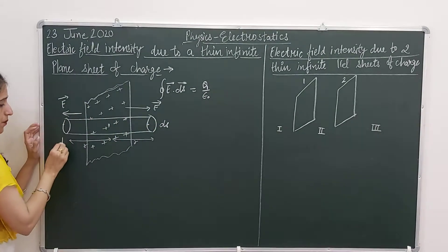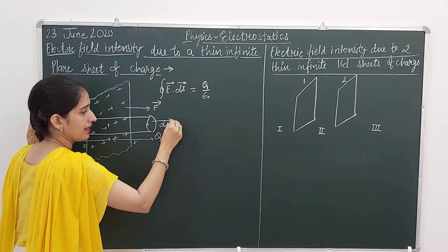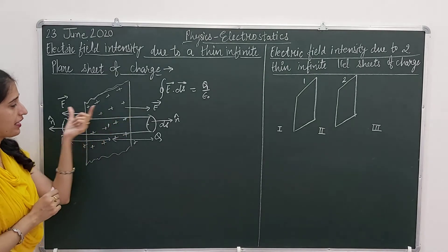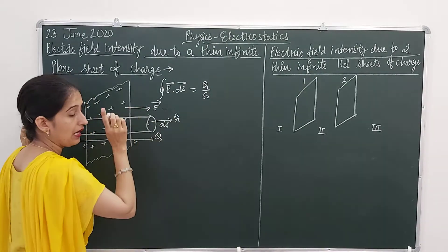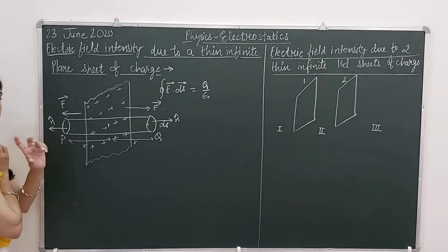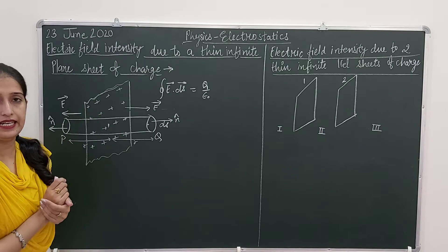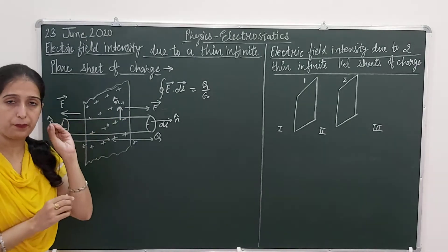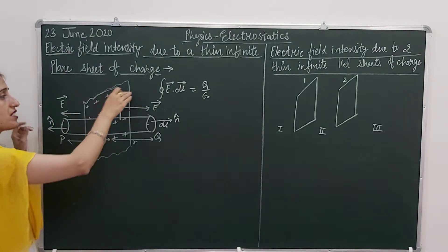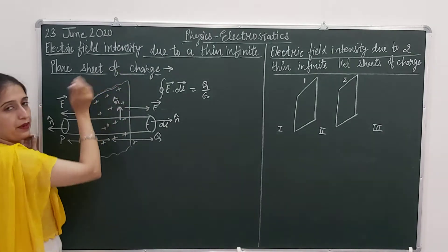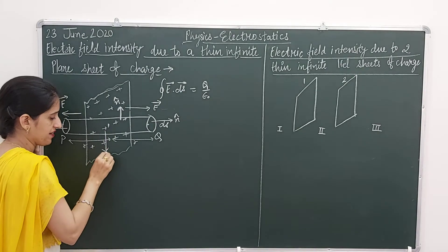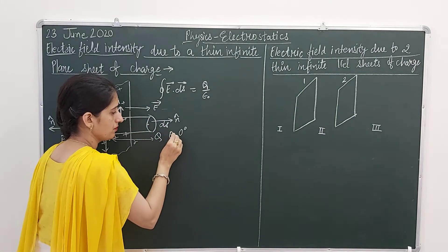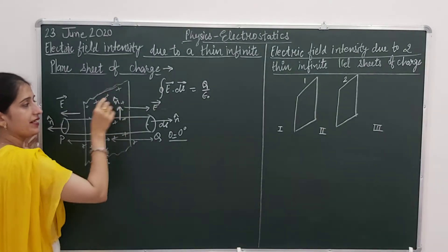Now if I talk about the two ends — suppose this end is P and this end is Q — at end P the N-vector shows its area vector, and at end Q also the N-vector shows its area vector. We have already discussed the direction of electric field intensity. So the electric field intensity is in this direction here and in this direction there. If I talk about the curved surface of the cylinder, the area vector will be perpendicular to the curved surface. The area vector is a normal drawn on the surface towards the observer.